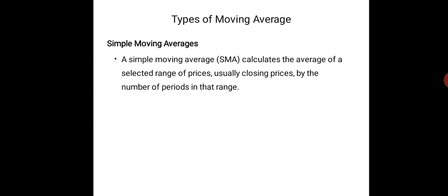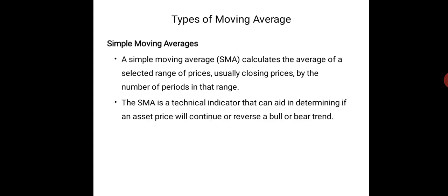We calculate the simple moving average by dividing the sum of closing prices by the number of periods in that range. For example, if the period is 5, we take the closing prices for those 5 periods, add them up, and divide by 5. The simple moving average is a technical indicator that can aid in determining if an asset price will continue or reverse a bull or bear trend.